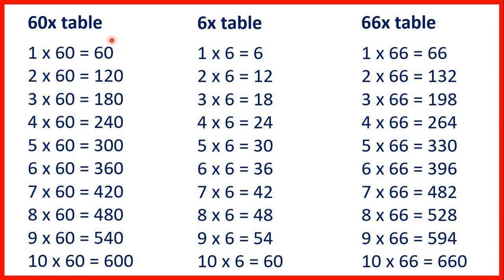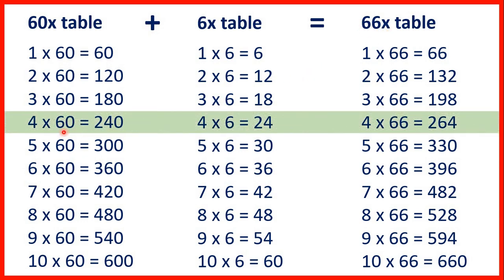Now for this first question we needed to work out 4 times 66. If we add the 60 times table and the 6 times table we get the 66 times table. So we could work out that 4 times 60 is 240 and 4 times 6 is 24, and that means that 4 times 66 is the total of 240 and 24. So that's 264.